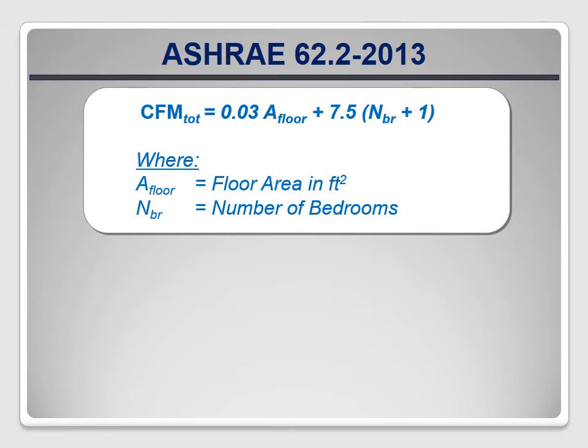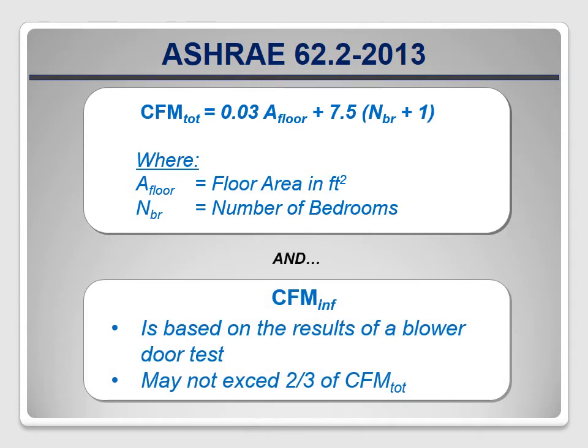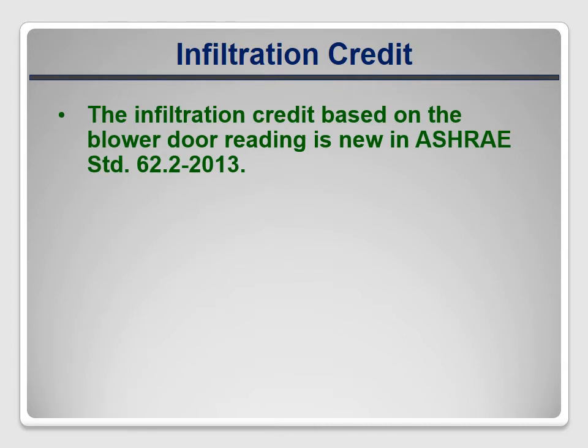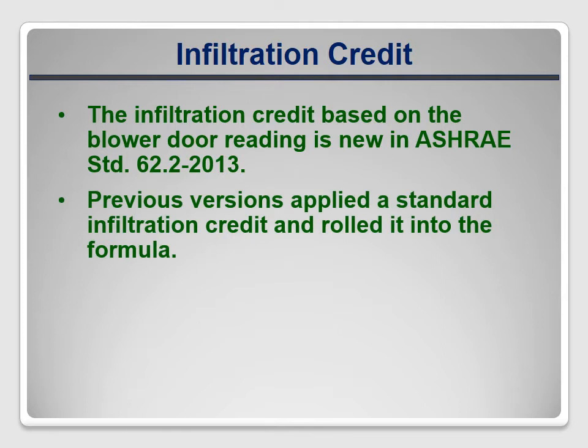The CFM infiltration, which is called the infiltration credit in the standard, is determined based on a blower door test on the completed house and it cannot exceed two-thirds of the CFM total. This method of using the blower door reading to determine an infiltration credit specific to each house is new to the 2013 version of ASHRAE 62.2. Recent versions applied a standard infiltration credit to each house and rolled it into the formula. In the 2007 and 2010 versions, for example, the credit was 2 CFM per 100 square feet of floor area.